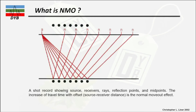Let's look at what NMO — normal move out — is. I will explain the NMO concept using a figure rather than a definition. In a shot record, you have multiple receivers on the right side and the source here. When the waves go into the subsurface, reflect back from the reflectors or any layer, and reach the receiver, this shot record shows the source-receiver ray path, the reflection point, the CMP (common midpoint) shown as a black dot, and the increase of travel time with offset.